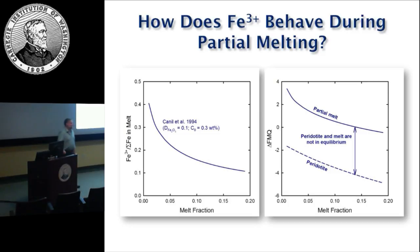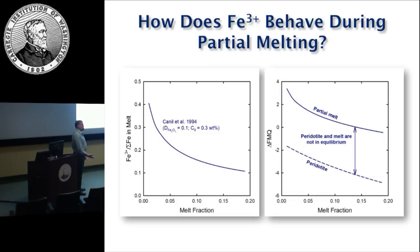The peridotite fO2 curve is calculated independently from the basalt curve — it takes ferric iron in the peridotite and calculates fO2 based on that, without assuming the basalt calibration equation. The relationship between fO2 and iron oxidation state shown earlier was the basalt curve; there's a different calculation for the peridotite residue. This is what I'm going to get to now: a model for the behavior of ferric over total iron during spinel peridotite partial melting.